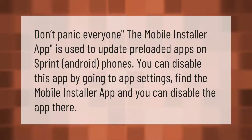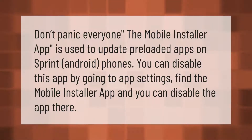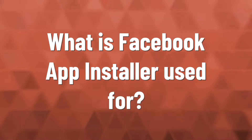The mobile installer app is used to update preloaded apps on Sprint Android phones. You can disable this app by going to app settings, find the mobile installer app, and you can disable the app there.